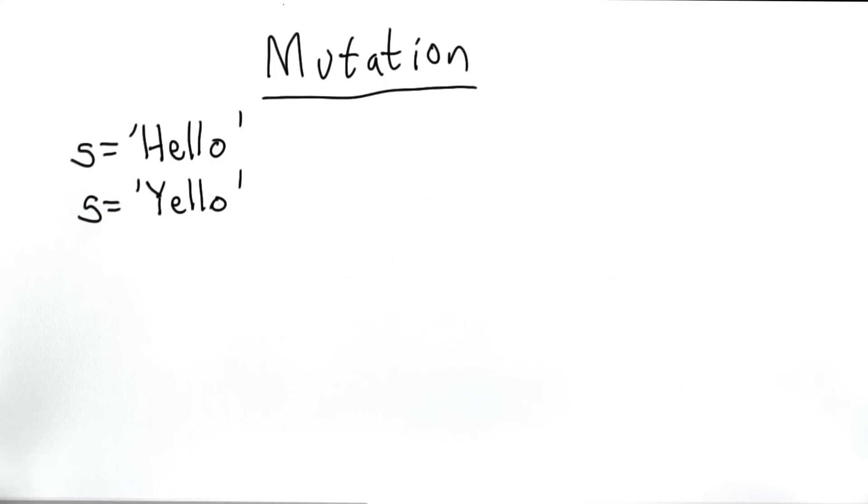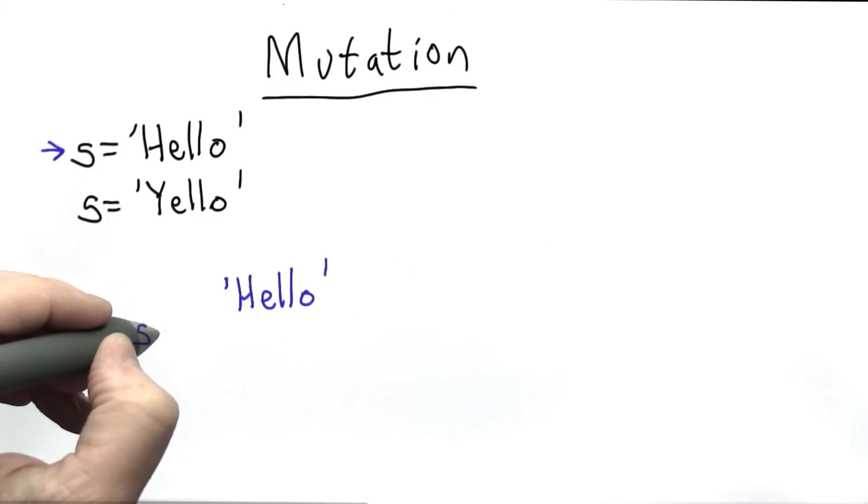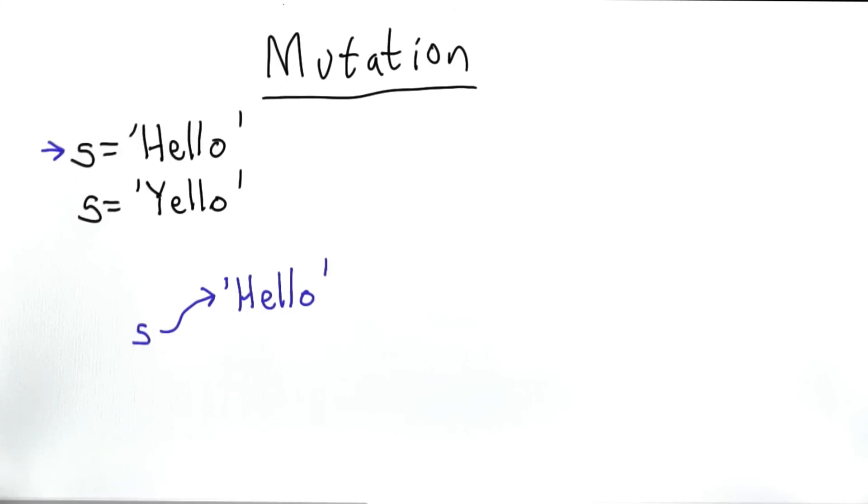We can change the value of the variable by creating a new string. So what's going on there is changing the value of s, but it's not changing the value of the string. When we did the first statement, it created a string with the value hello, and it introduced a variable s which referred to that string.